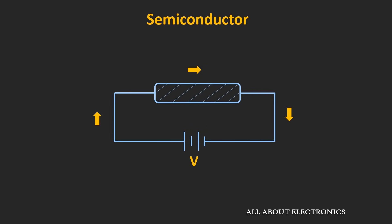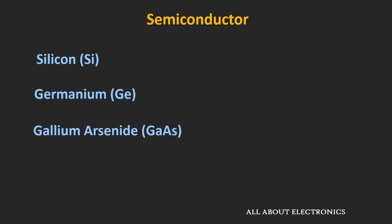In the case of a semiconductor, its conductivity is between that of an insulator and a conductor, so when voltage is applied it allows a moderate amount of current. Moreover, by adding impurities the conductivity of the semiconductor material can be changed, which is very useful for designing various electronic devices. Silicon, germanium, and gallium arsenide are a few examples of semiconductor materials.